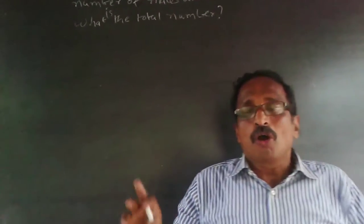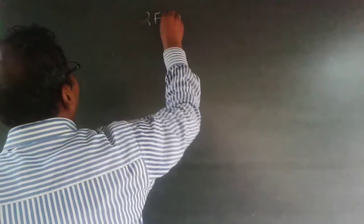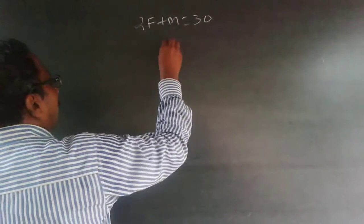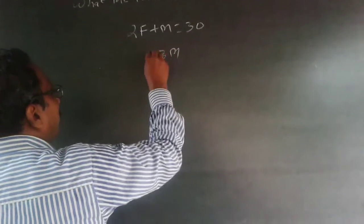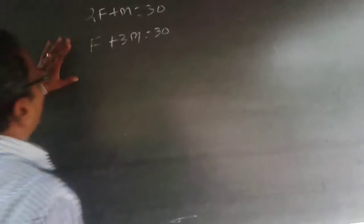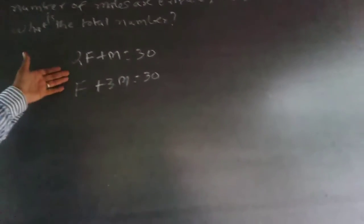If the females are doubled, it will be 2F plus M equals 30. And if the males are tripled, 3M plus F will equal 30. The females are not going out. Now let's solve this equation.